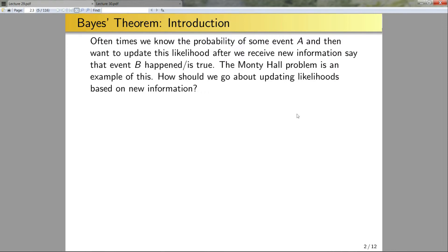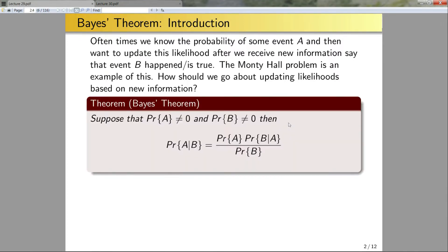I start by picking a door, and that door had a probability of one-third of having a goat behind it. Then I get new privileged information that the goat is not behind this door — Monty will only tell me where the prize is not. He'll never tell me where the prize is. So a natural question is how should I go about updating likelihoods based on new information?